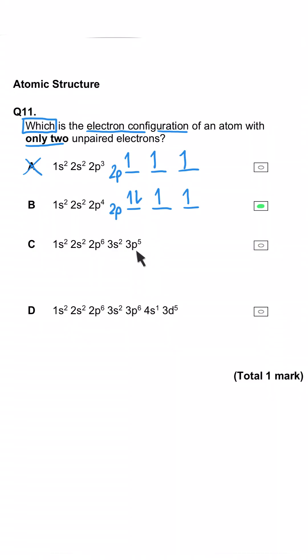In a test we'd move on, but just to finish here, 3p5 would only have one unpaired electron and here 4s1 3d5 would actually have six unpaired electrons. So very definitely wrong, B is the correct answer.